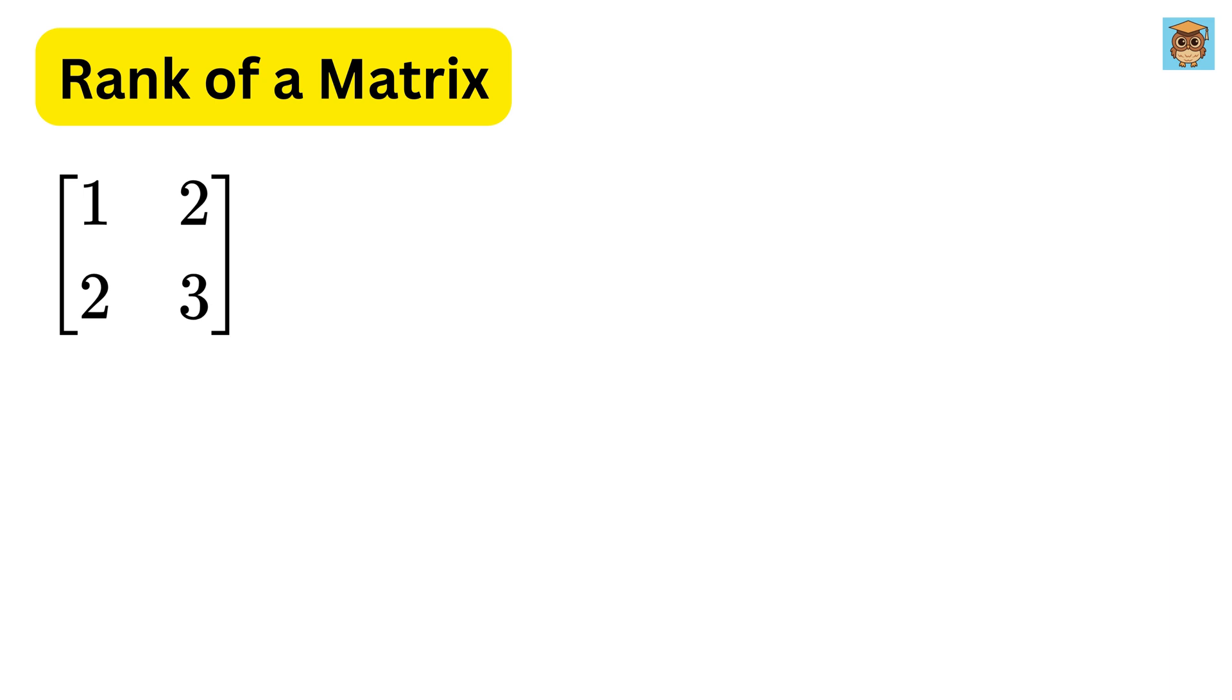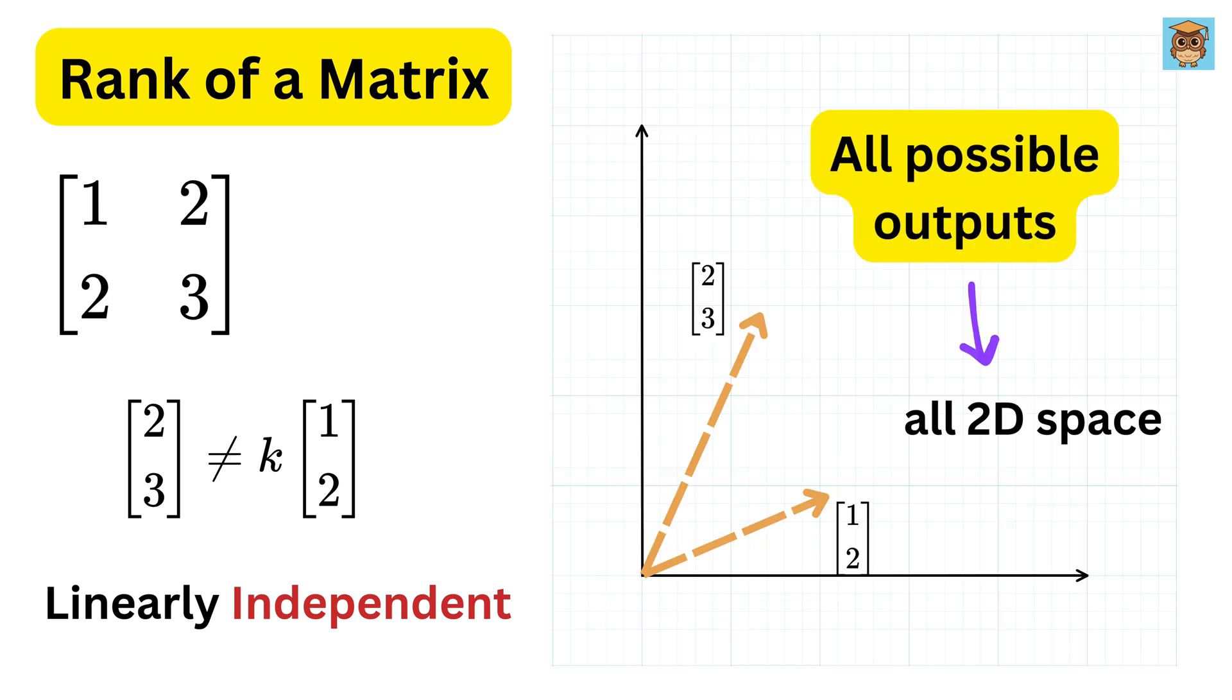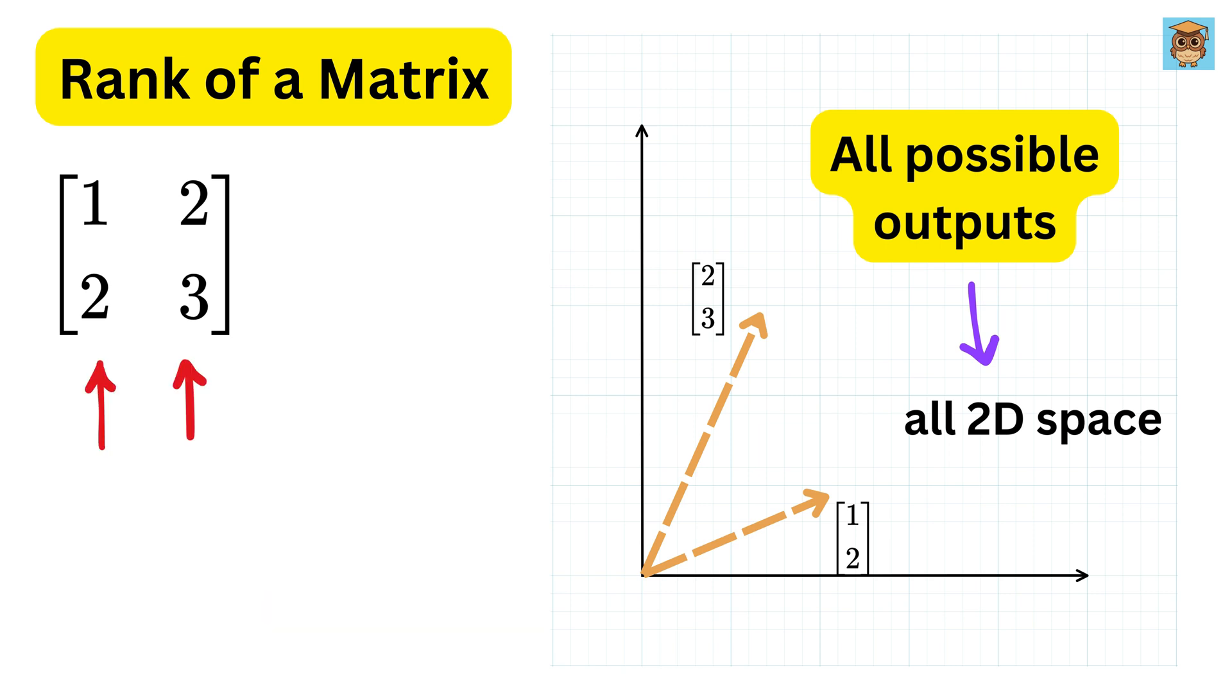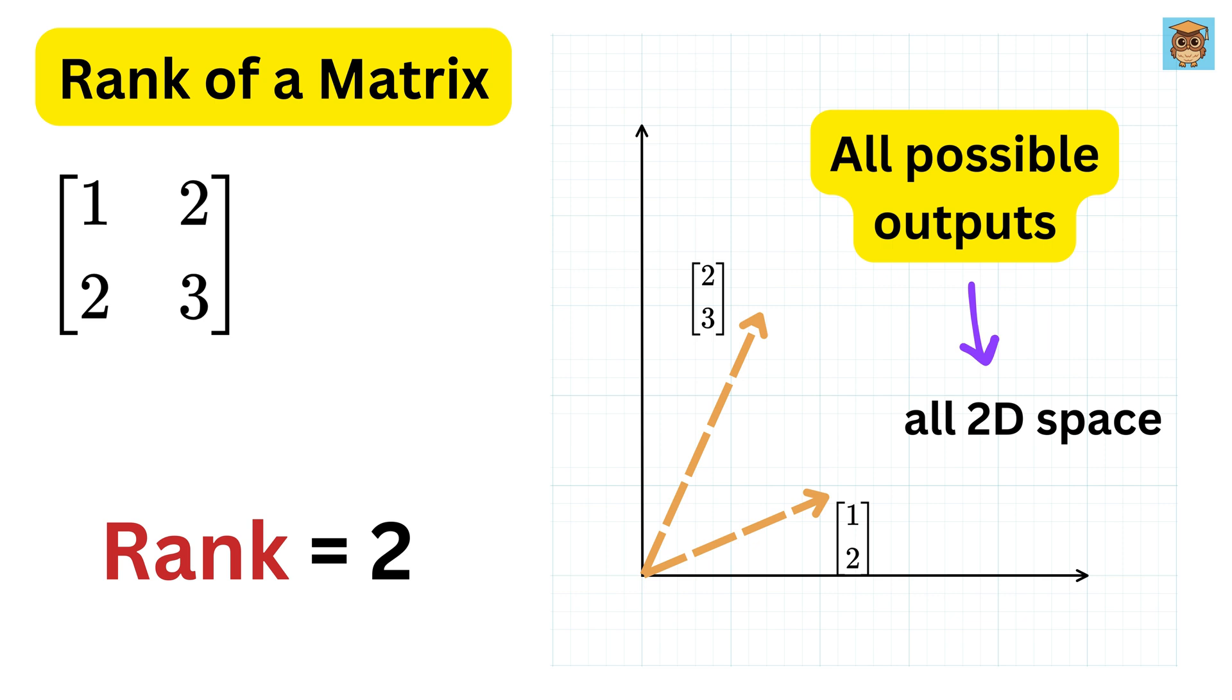But in the second matrix, the columns were not multiples of each other. They were independent, which means they pointed in different directions, and could be combined to reach any point in the 2D space. Since there are two such independent columns, the rank of that matrix is 2. So, you can think of rank as measuring the dimensions of the output space, which means the output vector can lie on a line, or 1D. So, rank is 1, or on a plane, which is 2D, or rank 2, or even higher.